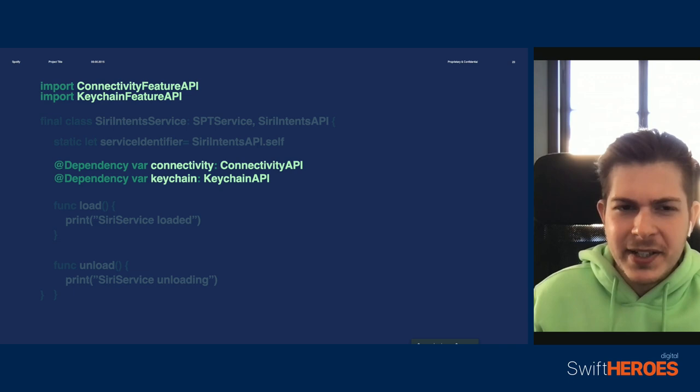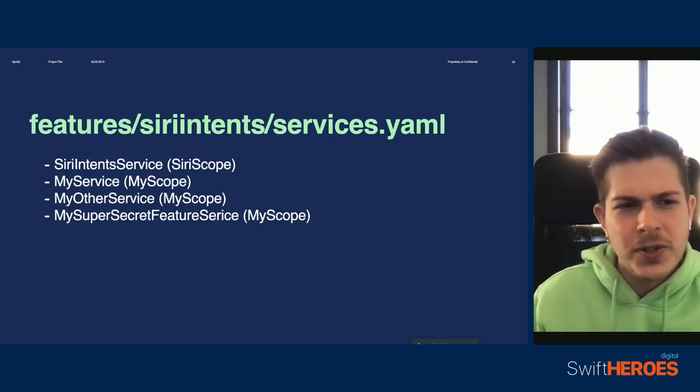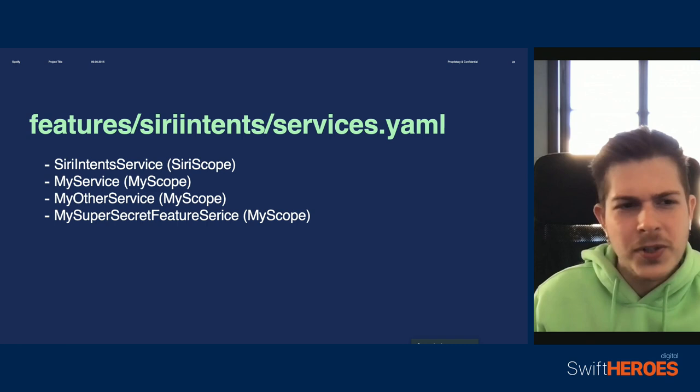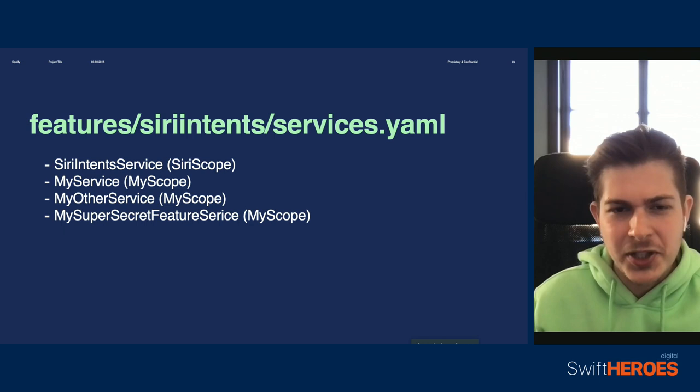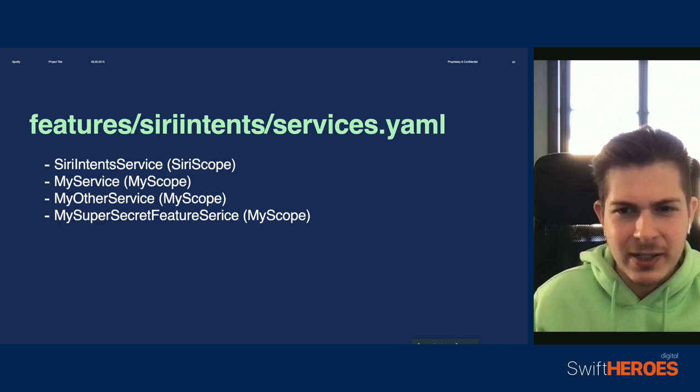With a service created, we should now expose it to the service system. For simplicity, we have abstracted the process by allowing developers to create a YAML file that contains a list of all services in a particular module, as well as the scopes they are supposed to belong to. These YAML files are processed when the developers generate our Xcode project, where the contents of these files are going to be converted to a list in the app delegate that actually exposes all services available in the app. So this is converted to actual code.